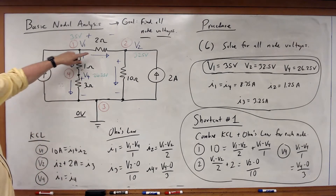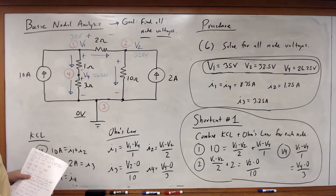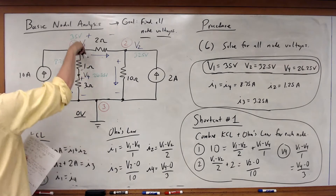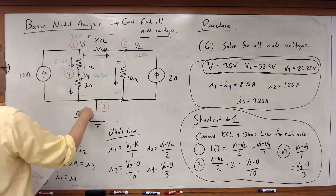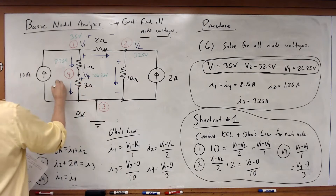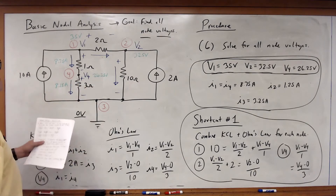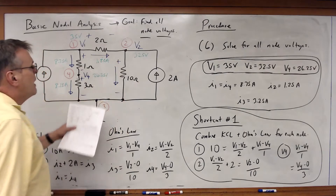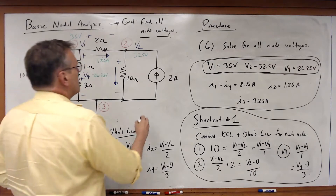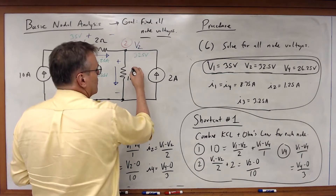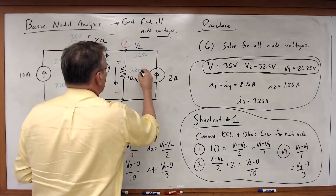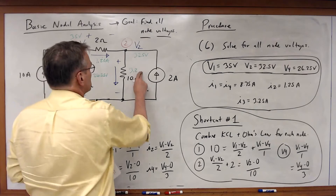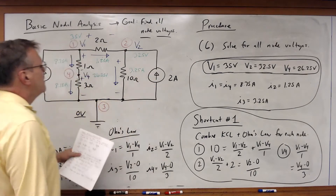Now I can just go through and quickly use Ohm's Law to solve for each of these currents. In this case, 35 minus 26.25 divided by 1 gives 8.75 amps. 26.25 divided by 3 is also 8.75 amps. V1 minus V2 divided by 5 equals 1.25 amps. And V2 divided by 10 — that is, 32.5 divided by 10 — equals 3.25 amps. So there are my currents.